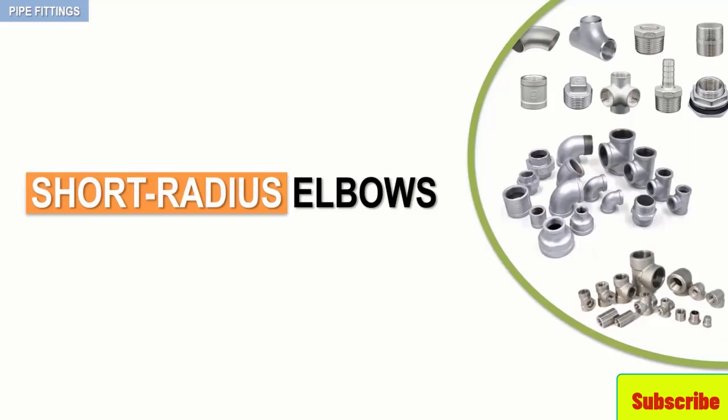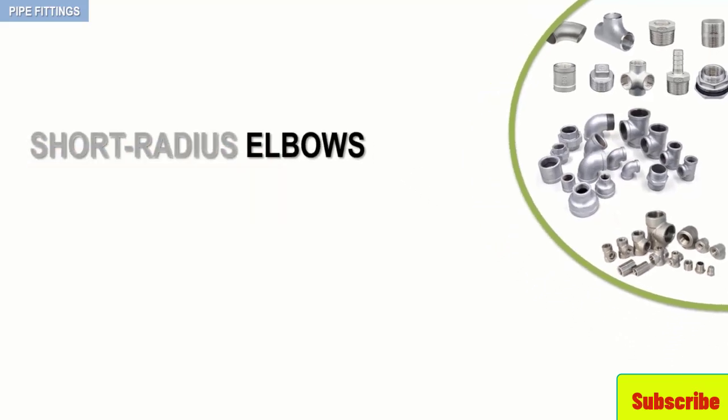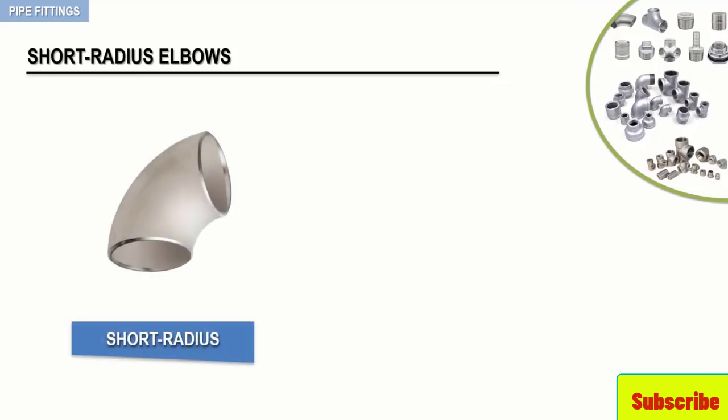In this video we're going to talk about another type of elbows, the short radius elbow. So let's have a closer look. Actually, the 90 degree short radius elbow, as in this example, is another elbow that may be used under certain circumstances and with permission from the customer.